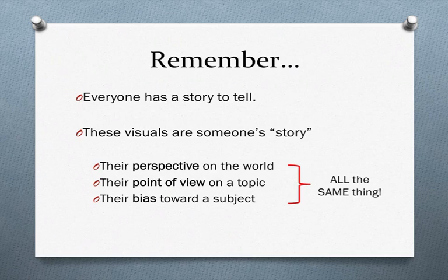Visual images represent one person's, or a group of people's, ideas about their world. They are somebody's story — this is their perspective on something, their point of view, even their bias toward or against a subject. Just like any newspaper article, short story, or poem that expresses the author's theme, these visual images have a theme of their own.